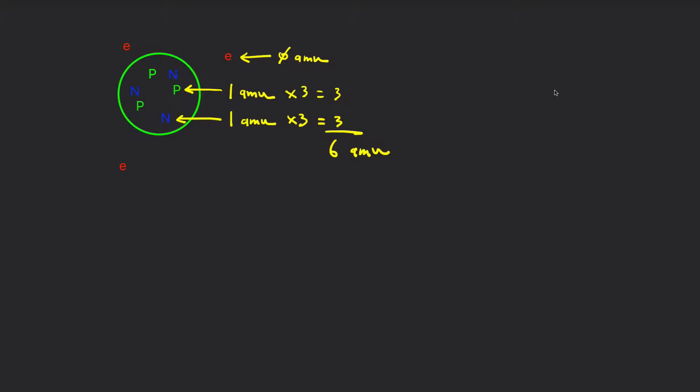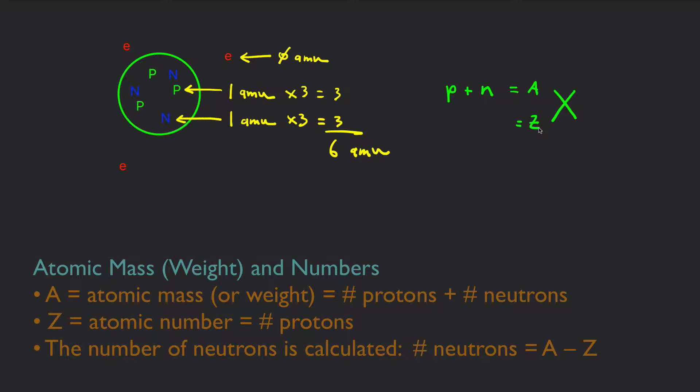One way to represent this is with the letters X, A, and Z, where A represents the atomic weight or atomic mass. And that is the number of protons plus number of neutrons, and the atomic number is the number of protons. So, for this particular species we have here, because it's three protons, that would be lithium, and it has a total mass of 6. So, in this case, X would be Li, A would be 6, and Z would be 3.